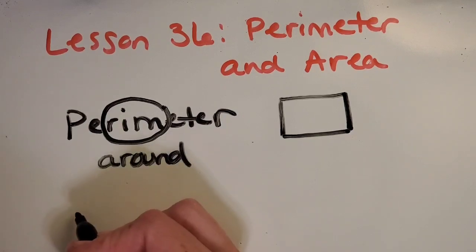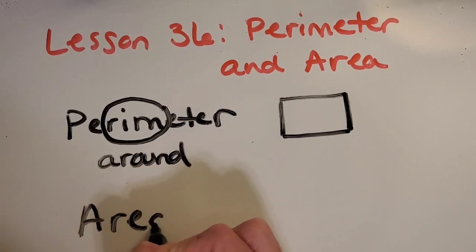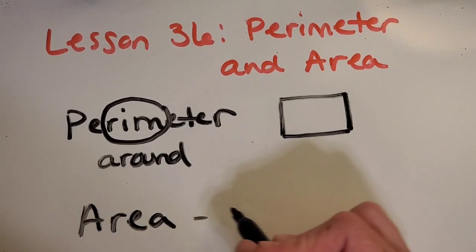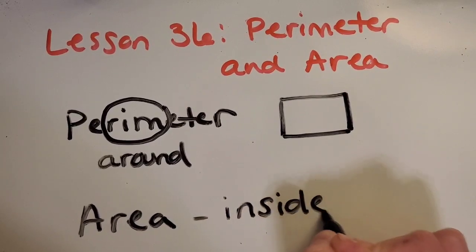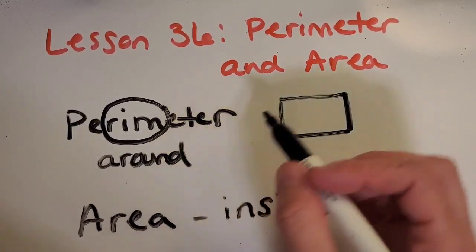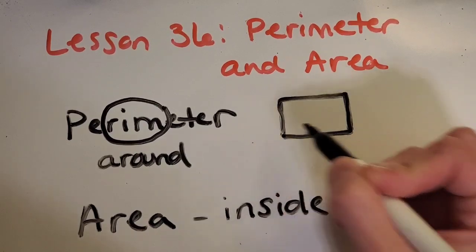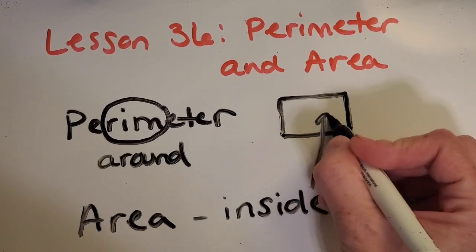Then we have the word area, and that is the space inside of the shape. So we have perimeter is around, and area is inside.